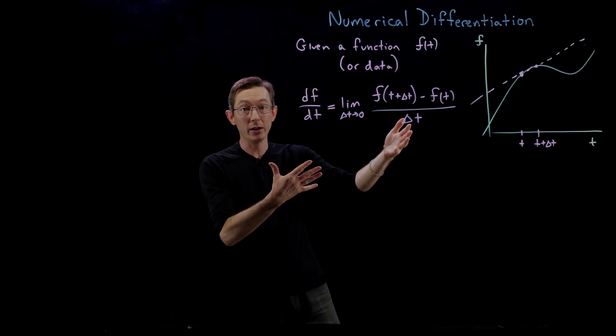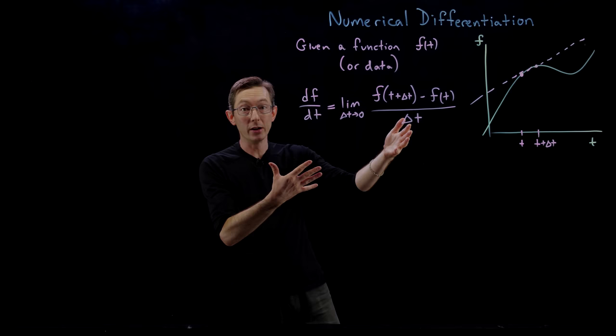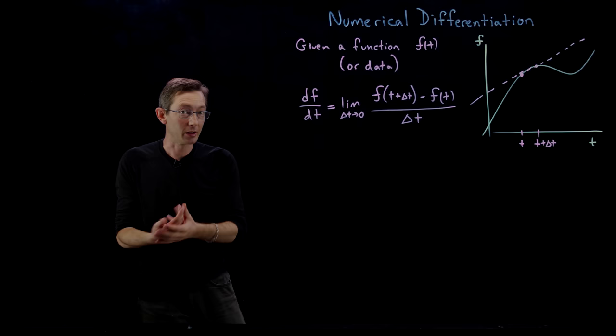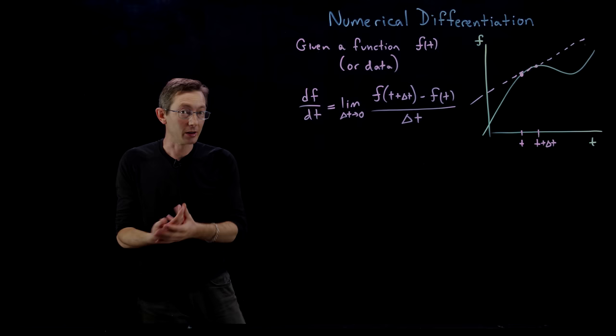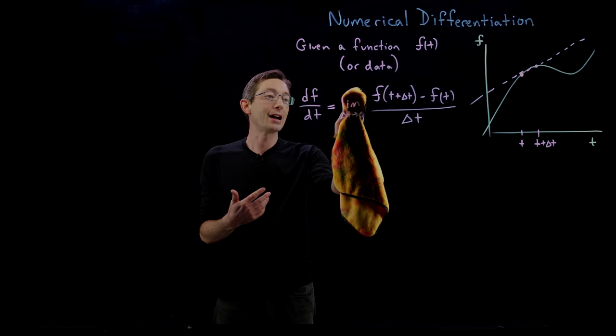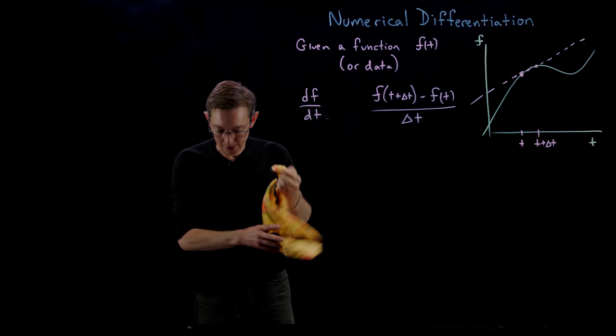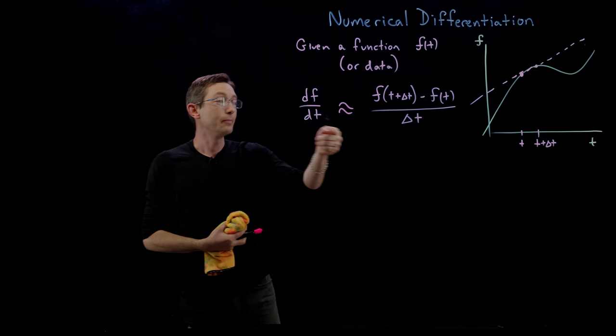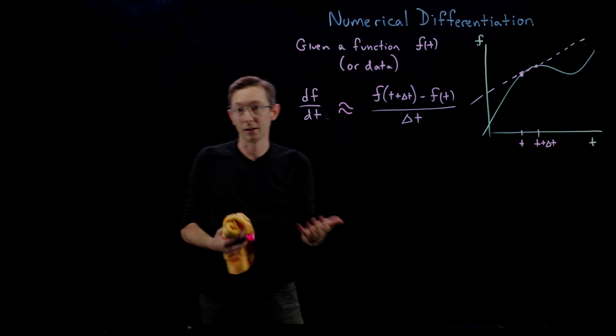We've spent a lot of time in our lives taking this limit as delta t goes to zero and making this infinitesimal limit to get this derivative. But what I'm going to show you in this lecture and the next several is that numerically — when you want to do this on a computer or on data — it's often convenient not to take the limit. We can approximate the derivative df/dt by taking this simple finite difference over a finite delta t time step.